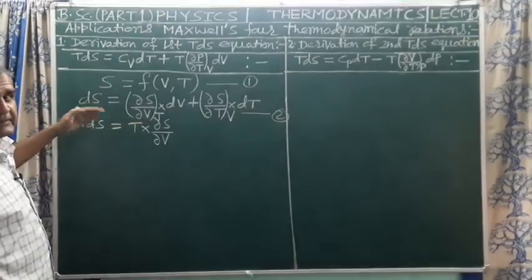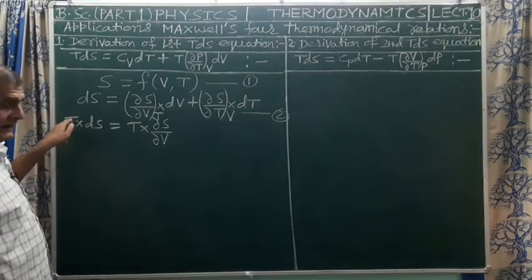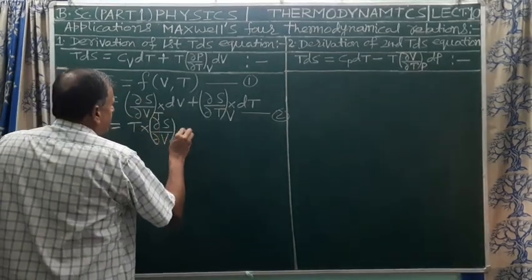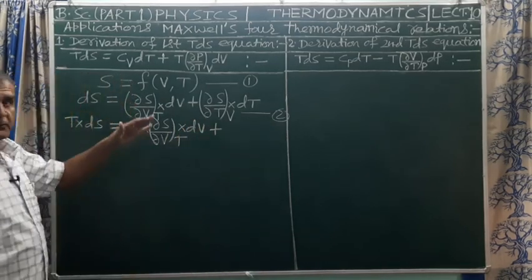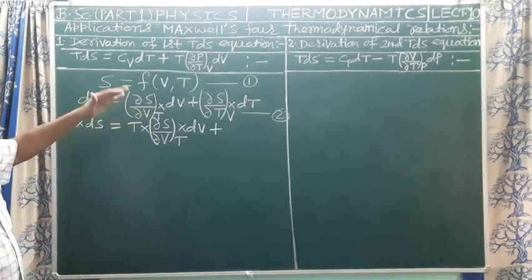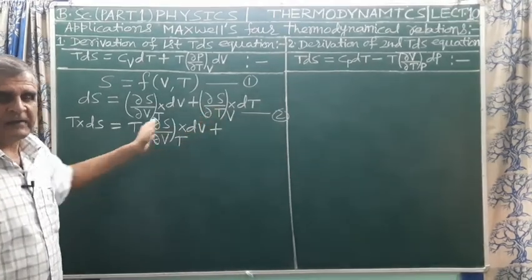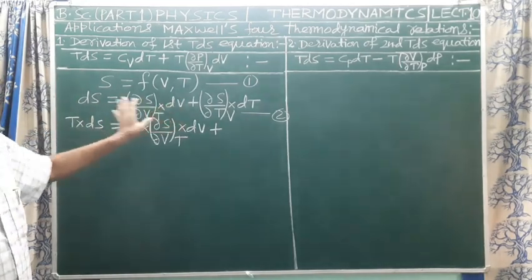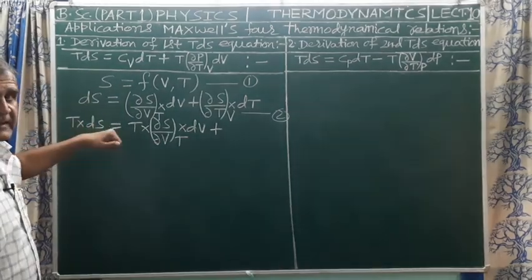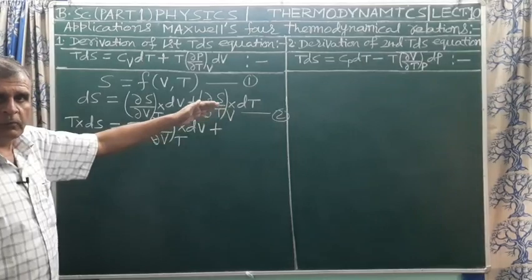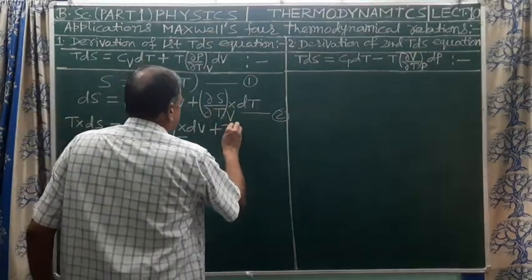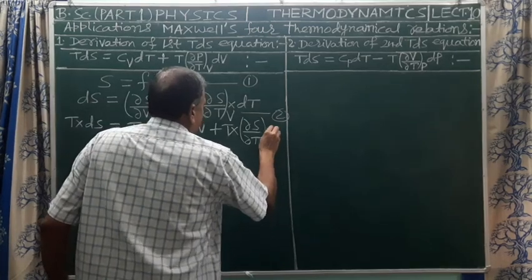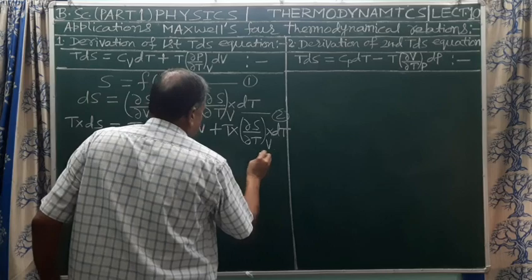After multiplying equation 2 on both sides by T, we have T·dS = T·(del S/del V)_T · dV + T·(del S/del T)_V · dT. Say this is equation number 3.